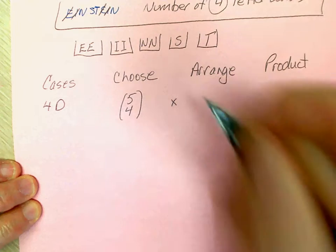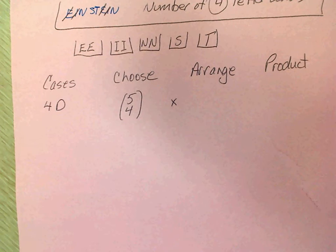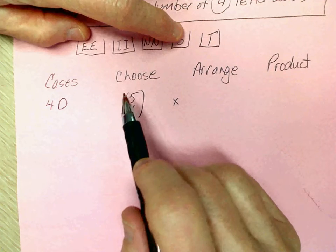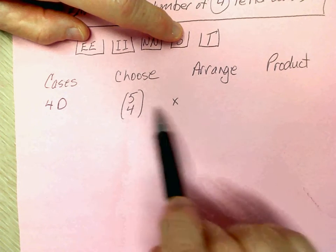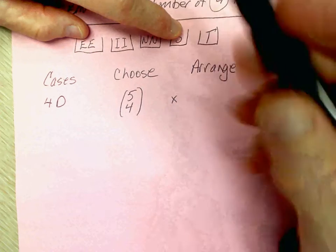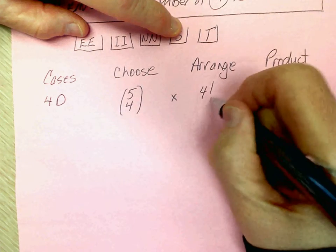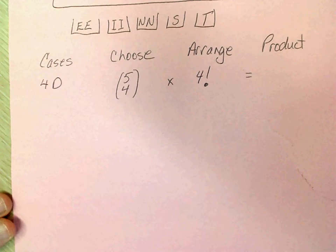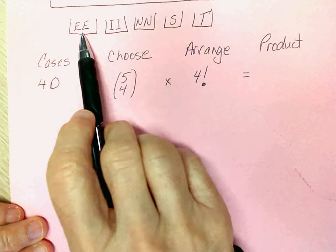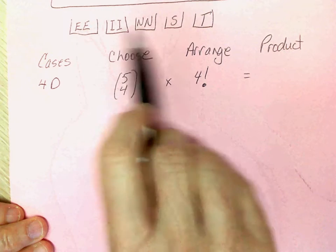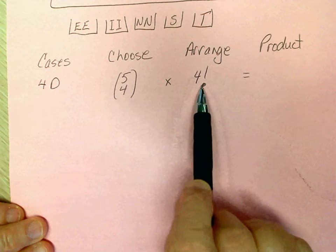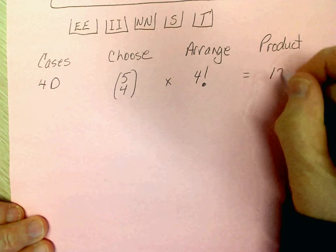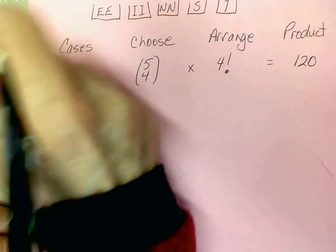And then, now that I've chosen my letters, let's say I've picked an E, an I, an N, and an S, I have four letters that I have to arrange, so that's four factorial. And when I work that out, five choose four, there's five ways I can pick four of five letters, and there's four factorial ways of arranging them, I get 120. That was case number one.